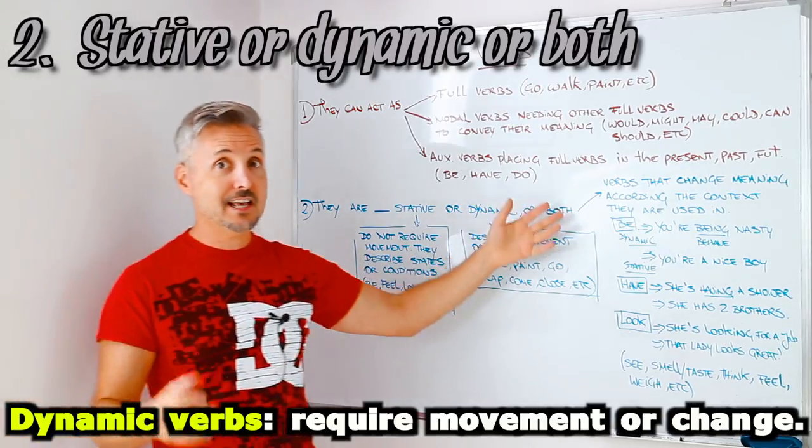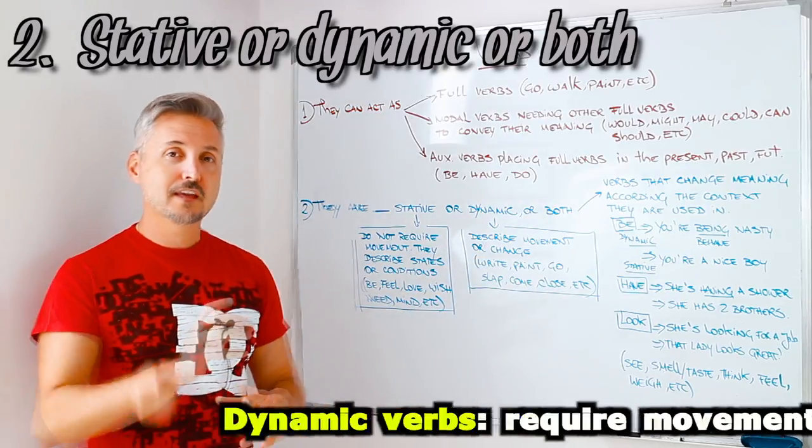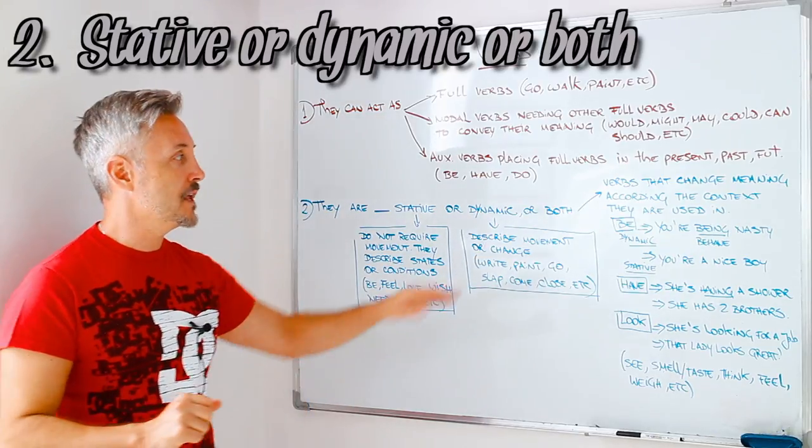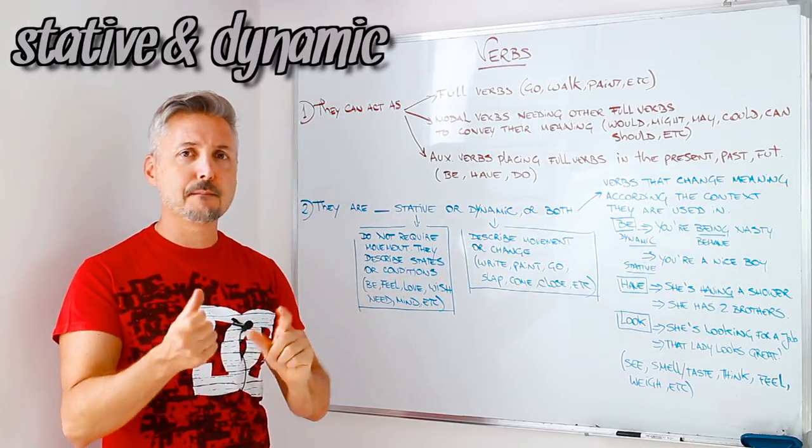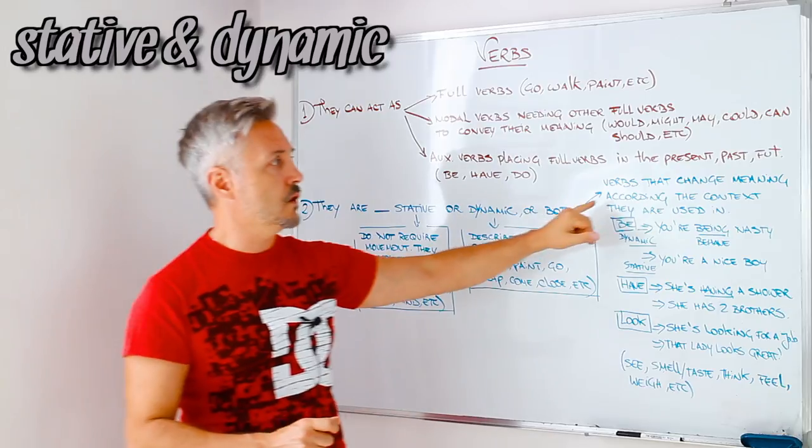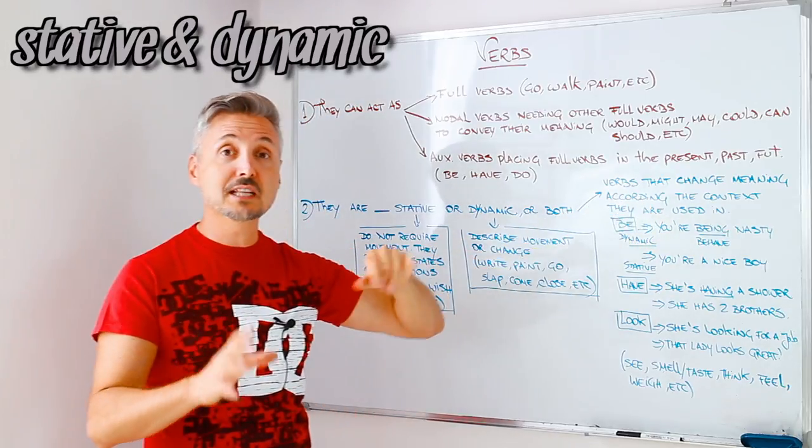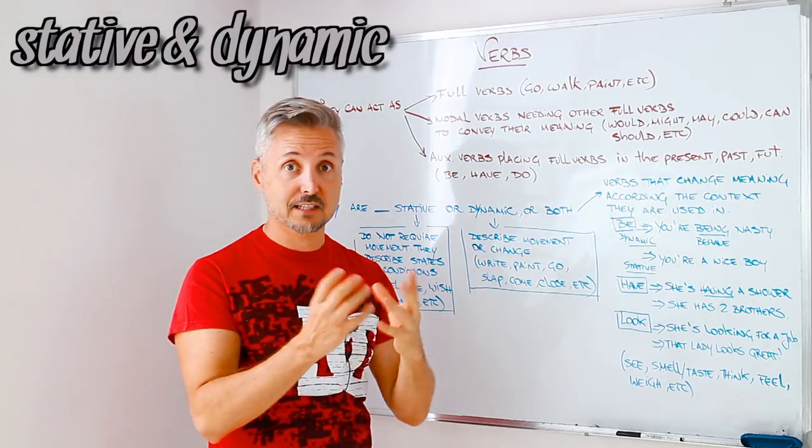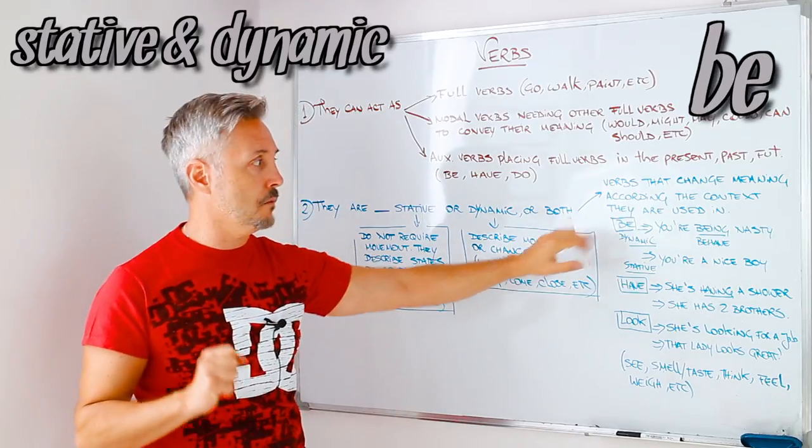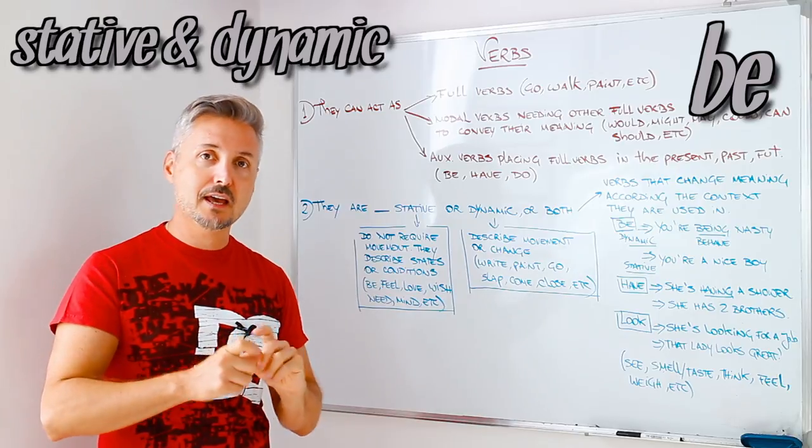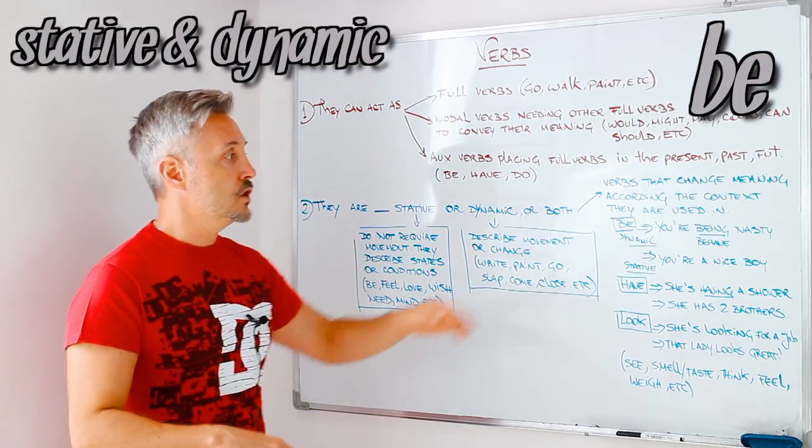And I said that they can be both. And this is the point that I want to talk about. They can be both, yes, both, both dynamic and both stative. So, they can change meaning according to the context they are placed in. So, let's look at be, for example.